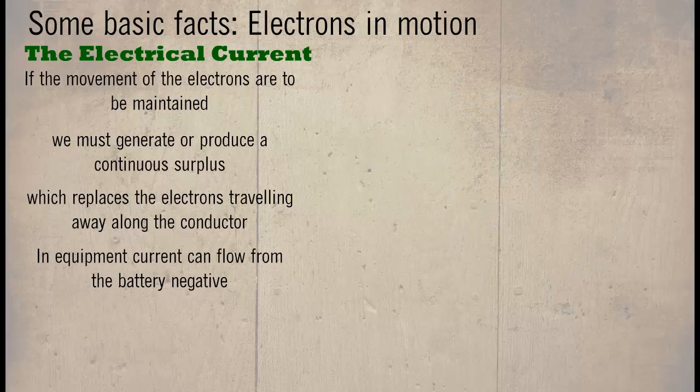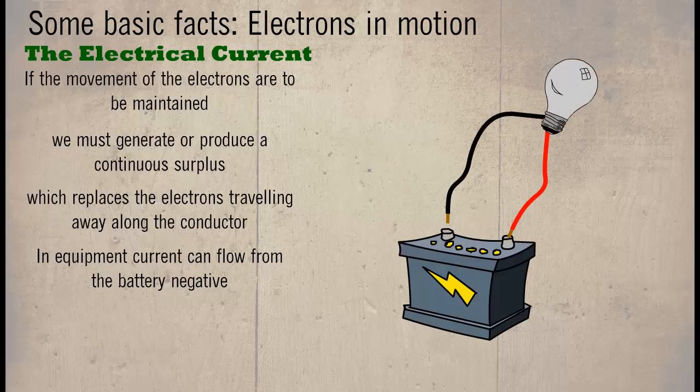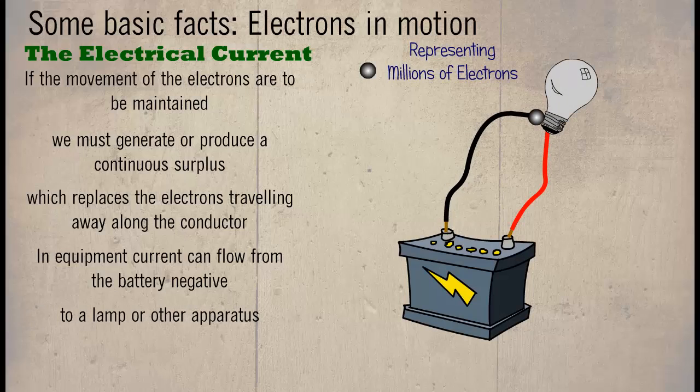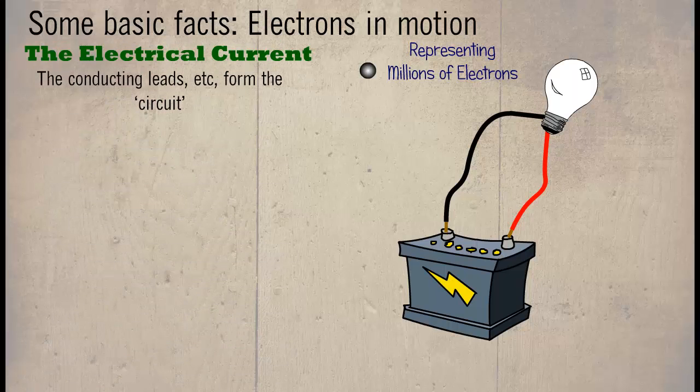In equipment, current can flow from the battery negative to the lamp or other apparatus, then back along the second conductor to the battery positive. Conducting leads, etc., form the circuit.